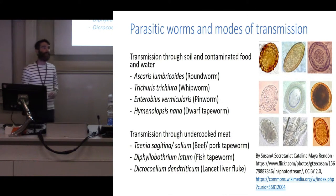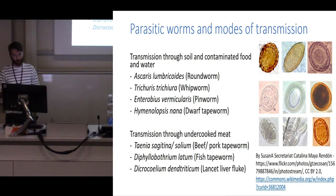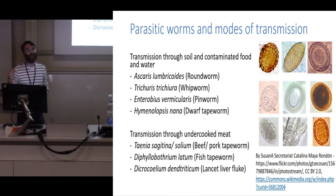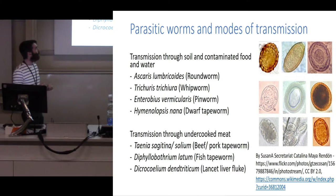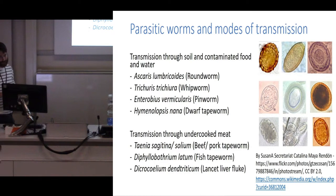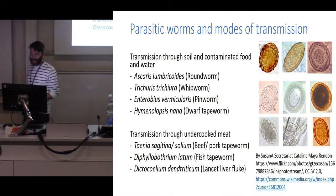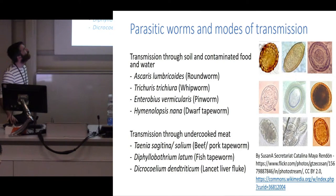Hymenolepis nana, the dwarf tapeworm — all of these are transmitted through soil, water, or contaminated food, but they haven't used an animal as an intermediate host. Others, like Taenia saginata — the beef or pork tapeworm, shown dead center — come from undercooked beef or pork. Diphyllobothrium latum, the fish tapeworm, comes from undercooked freshwater fish and grows to 20 meters long in its host — that's us. And Dicrocoelium dendriticum, the lancet liver fluke, which is really only an opportunistic parasite of humans.